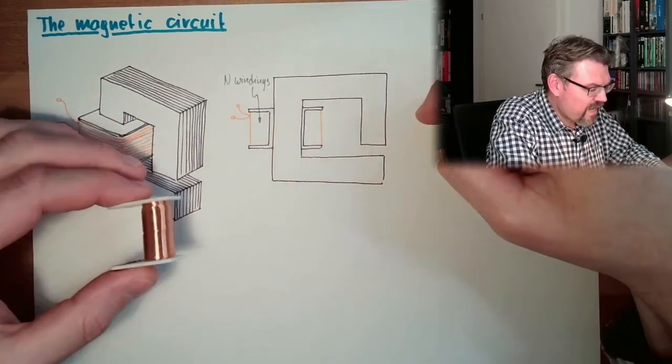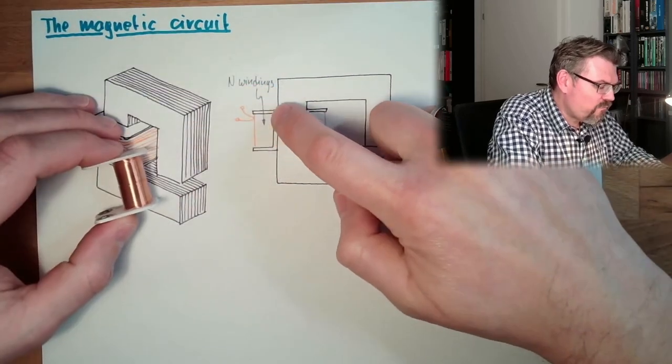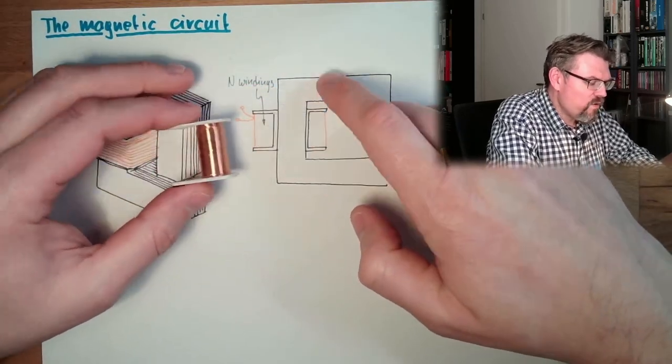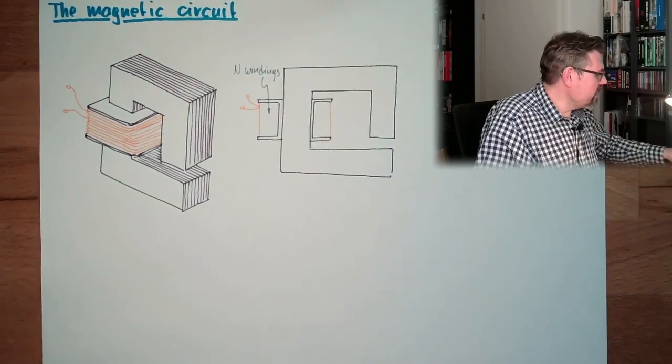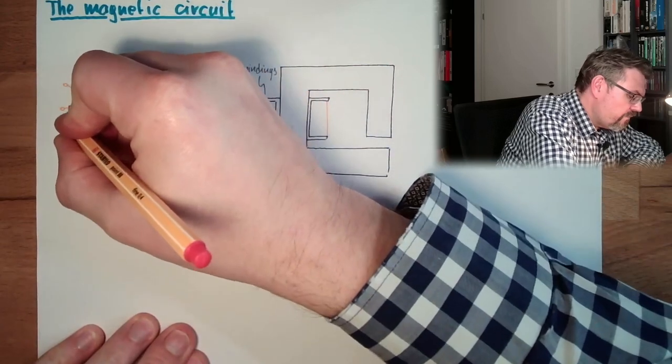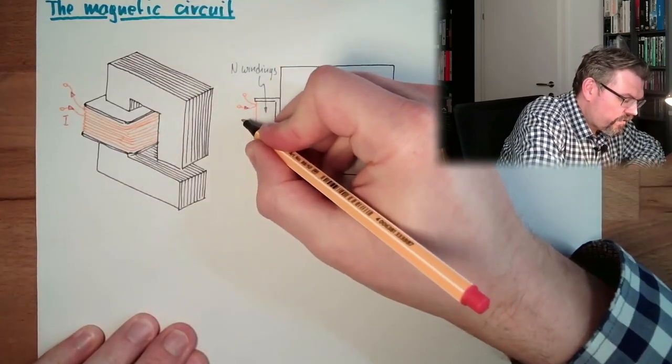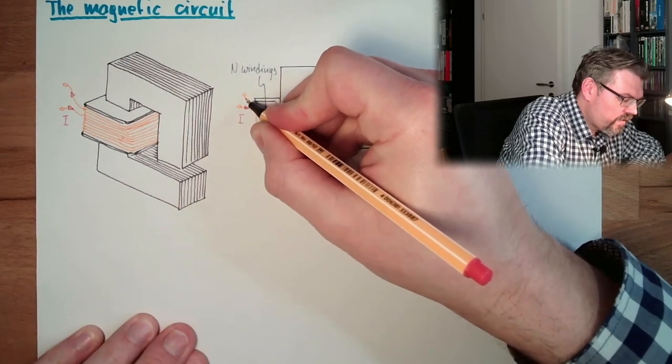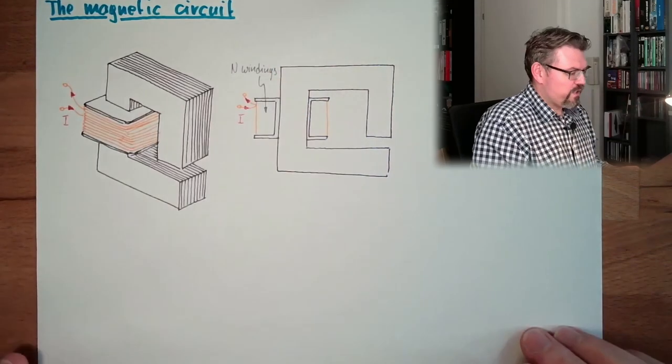We have a current going into this coil, here. We have a current in and it must come out somewhere. So we have a current in, must come out somewhere as well. That's our situation.